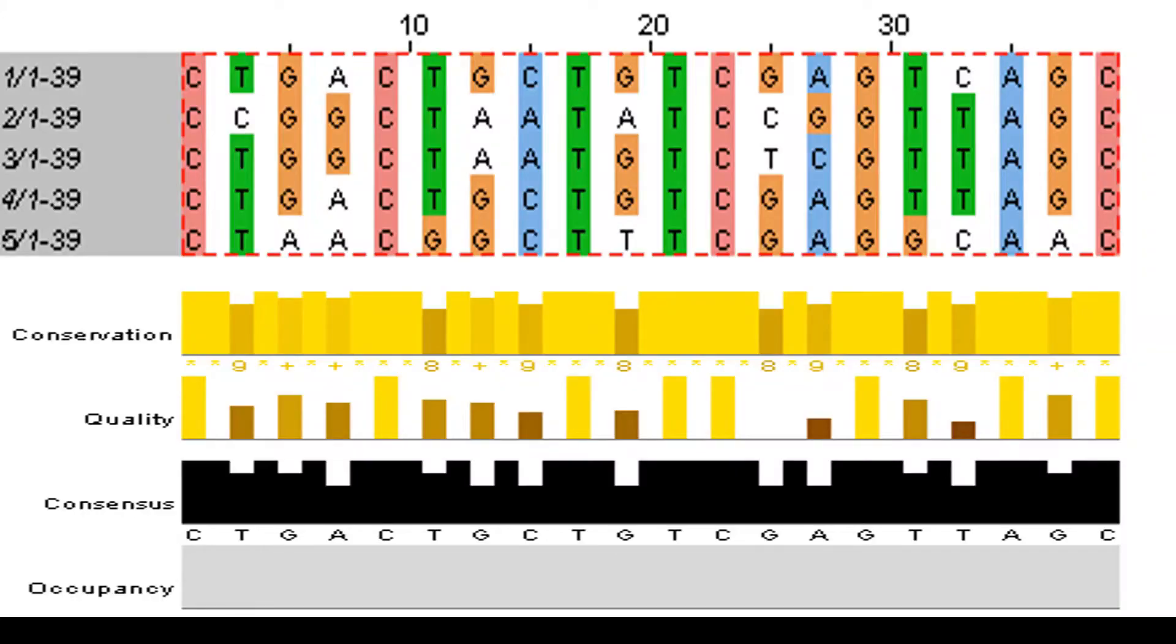This is what an alignment looks like. This is from Jalview. It gives an idea about the conservation quality, consensus, occupancy, and this is how the sequences look like.